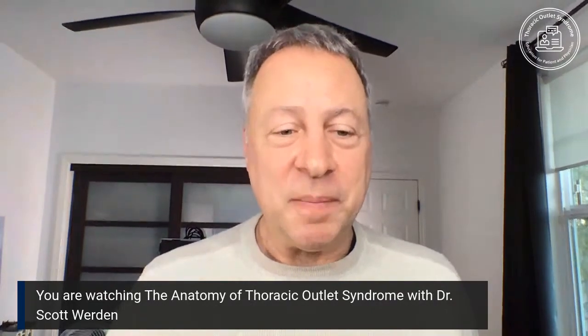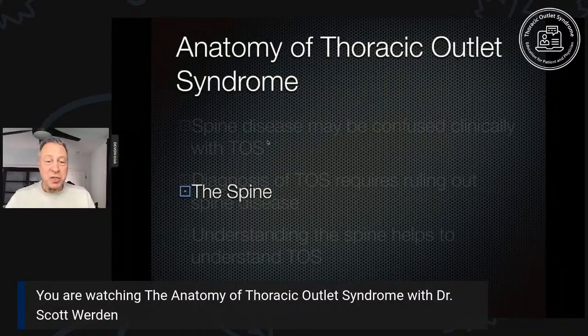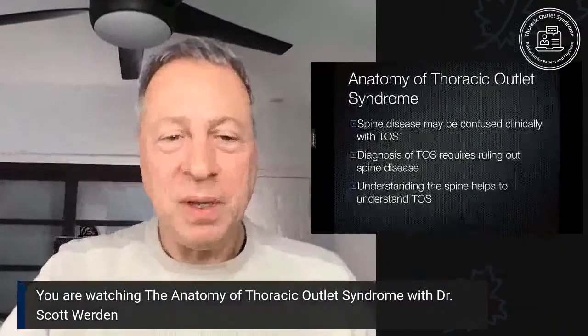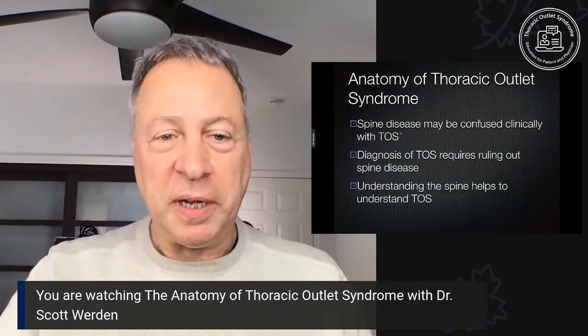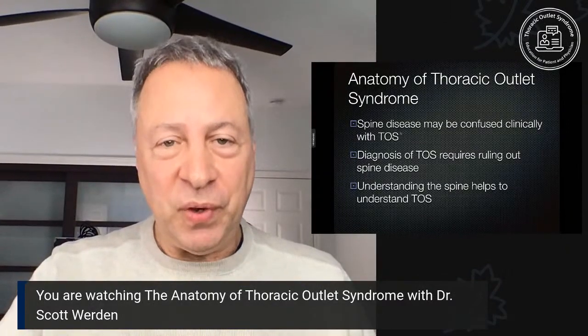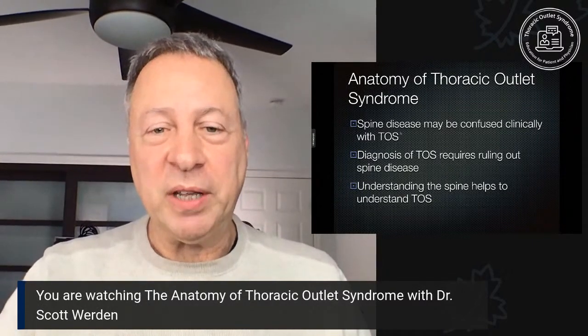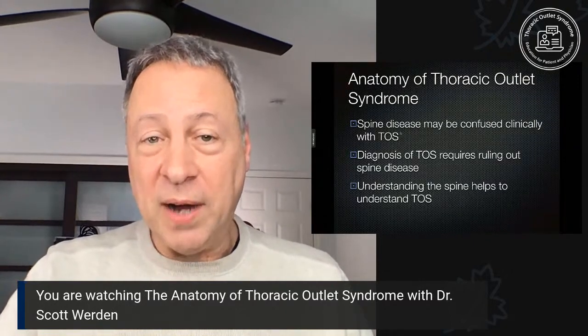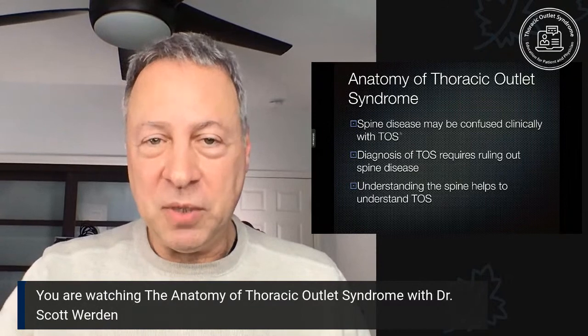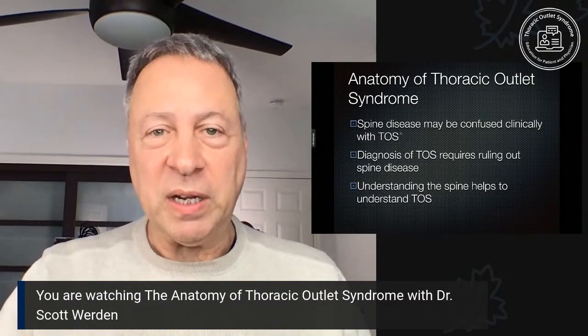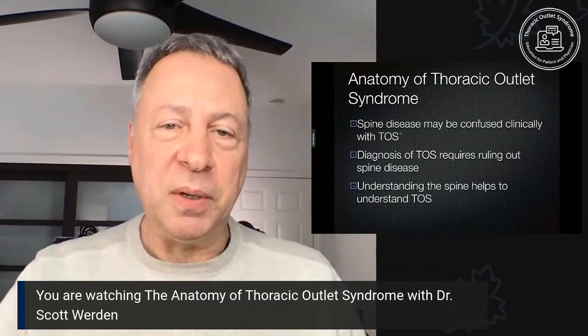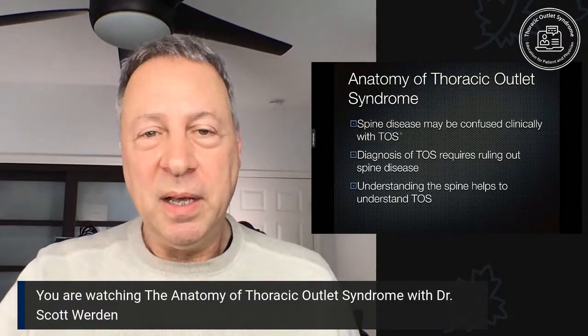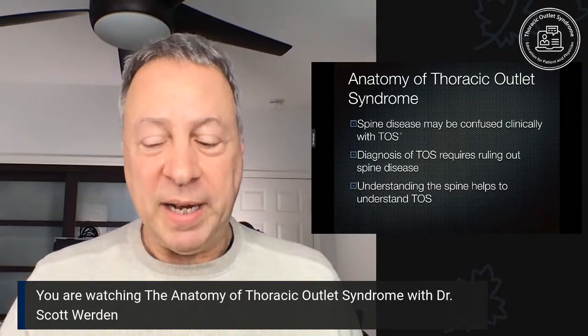Today we're going to take a little bit of a different approach. We're going to start with our star for today — the focus is going to be on the spine. You might ask, what does the spine have to do with thoracic outlet syndrome? First, when your doctor clinically examines you, spine disease may be confused with TOS. It's difficult to differentiate those in many patients. Secondly, to diagnose TOS requires that we rule out other pathologies such as spine disease. And finally, if we can understand some of the underlying principles of the spine and spine disease, we'll have a better grasp on thoracic outlet syndrome and its mechanisms.